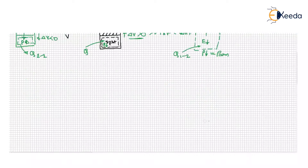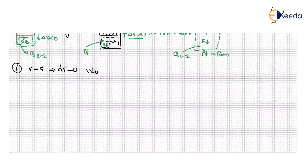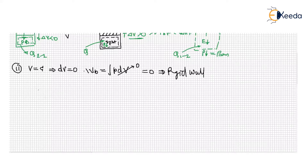The second case is the constant volume process, where the change in volume is equal to zero. So boundary work is equal to the integral of P dV. If dV is zero, that means there is no boundary work. This is the case of a rigid wall — if you assume a rigid wall, there is no boundary work.